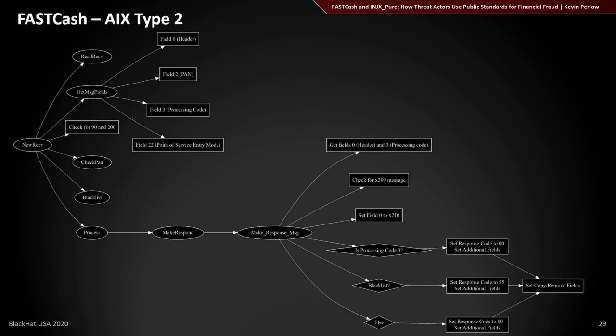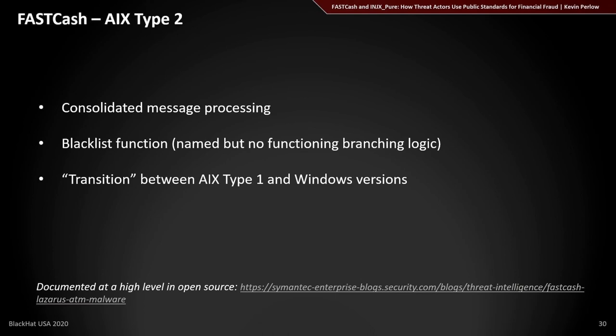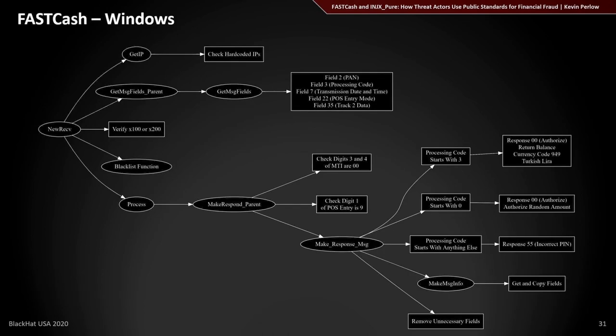There isn't time to cover AAX type 2 in detail, but the graph is available for independent analysis. If you can reverse the first one, you can reverse the second — the concepts are the same with some structural differences. AAX type 2 serves as a bridge to the Windows version, and at a high level you'd see that a lot of the payment logic has been consolidated, which is what we'll examine in the Windows version.